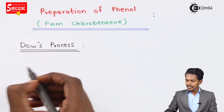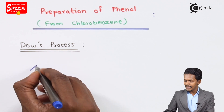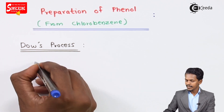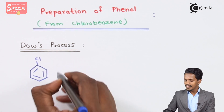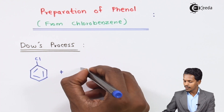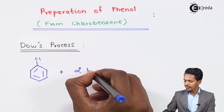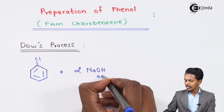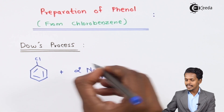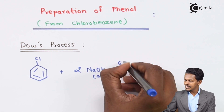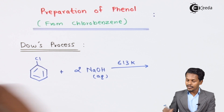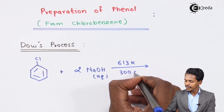In Dow's process, we consider chlorobenzene and treat it with an excess amount of NaOH — that is 2 moles of NaOH — in an aqueous solution. We provide a temperature of 613 Kelvin and a high pressure of around 300 atmospheres.